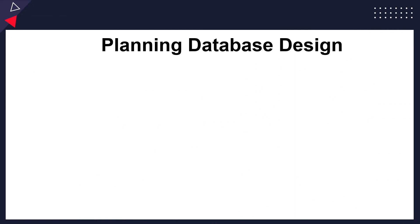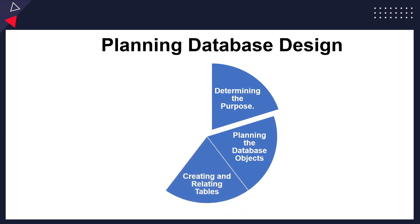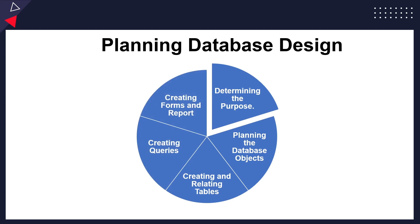Finally, I want to look at how to plan successfully for creating a database — you don't just begin creating tables or forms, you must plan a database design. The steps to follow are: Step 1, determine the purpose; Step 2, plan the database objects; Step 3, create the tables; Step 4, create queries; and Step 5, create forms and reports. If you follow these five steps, you'll have a very good working database for your organization.